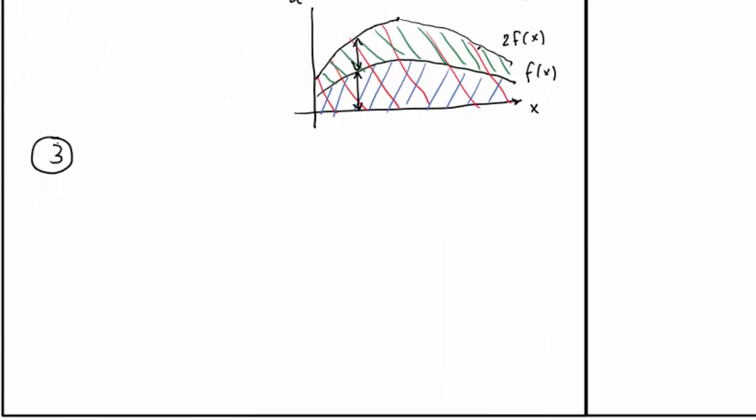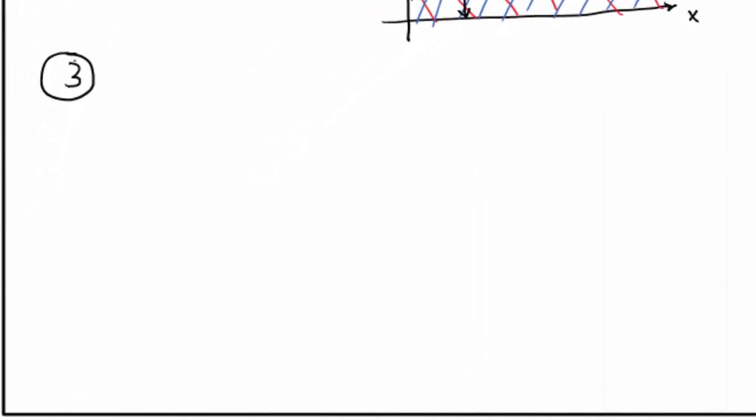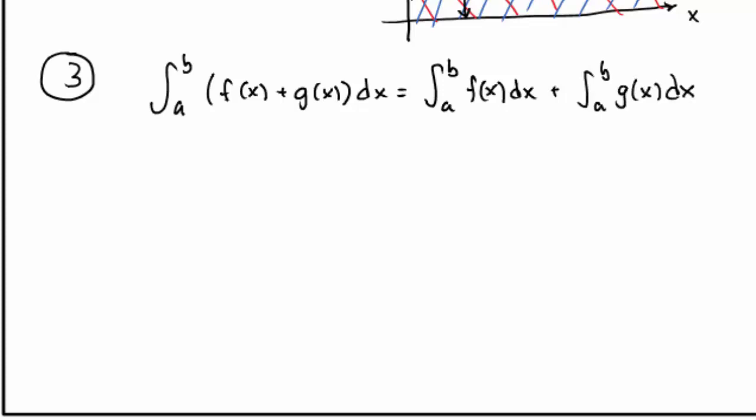So let's take a look at the third rule. This deals with the integral of the sum of two functions. So this third rule says that if I want to integrate the sum of two functions, f and g, I will get the same result if I integrate f by itself, g by itself, and add these two integrals. So let's look at the geometry.